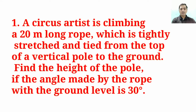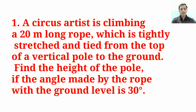Let us see the first question of exercise 9.1. A circus artist is climbing a 20 meter long rope which is tightly stretched and tied from the top of a vertical pole to the ground. Find the height of the pole if the angle made by the rope with the ground is 30 degrees. This question is based on an artist in a circus who has to climb a 20 meter long rope making a 30 degree angle with the horizontal line.